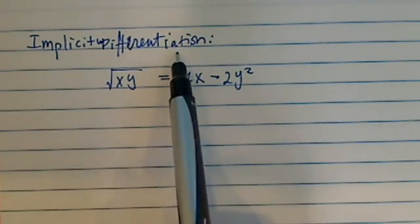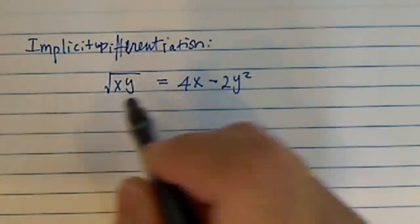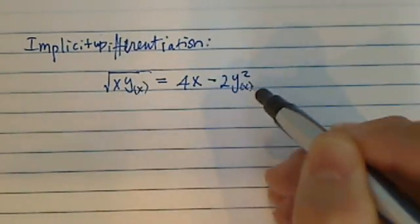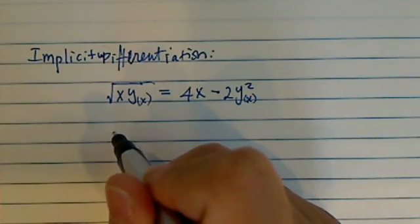To find the implicit differentiation of this variable, what you have to realize is that you've got to treat y as a function of x. So when you find a derivative using chain rule, you've got to be careful. Let's give it a try here.